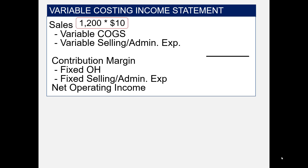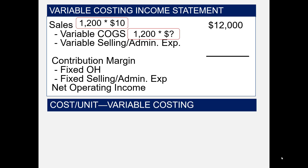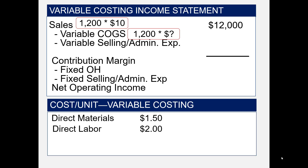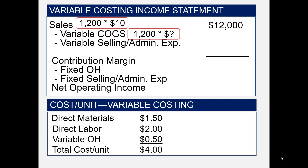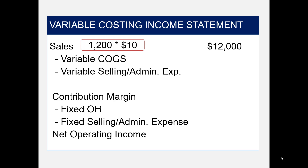Sales were given to be 1,200 units at $10, or $12,000. For variable cost of goods sold, we take the shortcut: we produced 2,000 units but only sold 1,200. The cost per unit under variable costing includes direct material $1.50, direct labor $2, and variable overhead $0.50, for a total of $4.00. So cost of goods sold is 1,200 times $4, or $4,800.